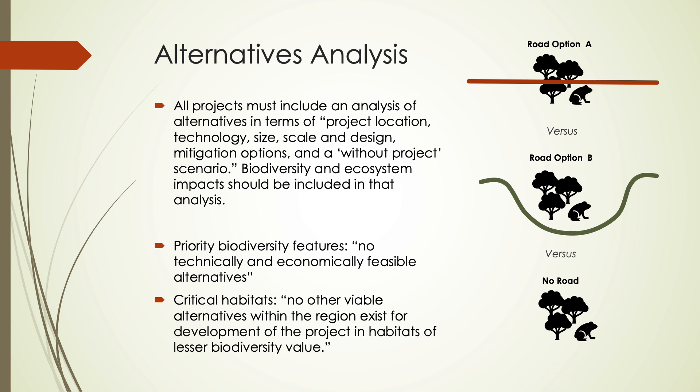As required in PR1, projects must include an analysis of alternatives in terms of project location, technology, size, scale and design, mitigation options, and a without-project scenario. Biodiversity and ecosystem impact should be included in that analysis. Where the proposed project or plan impacts priority biodiversity features, it must be shown there are no technically and economically feasible alternatives. Where impacts are expected on critical habitats, it must be shown that no other viable alternatives within the region exist for development of the project and habitats of lesser biodiversity value.